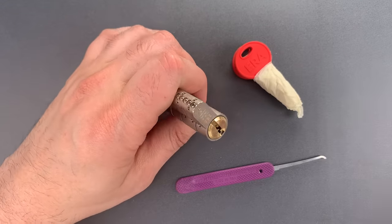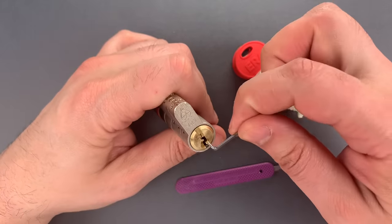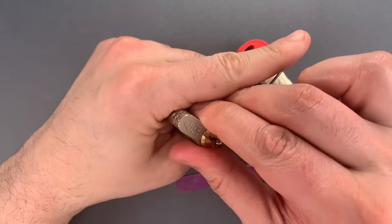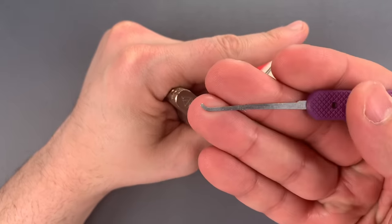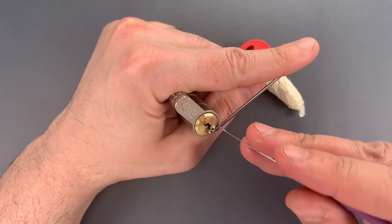But before we get to the trap pins, we need to pick the lock open. I'm going to use a wiper insert in the bottom of the keyway as a turning tool and this medium hook in 18 thousandths.